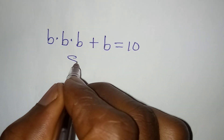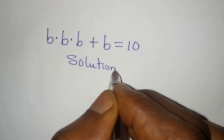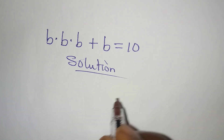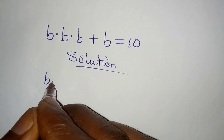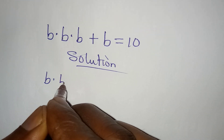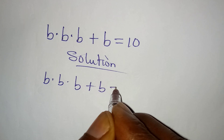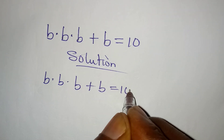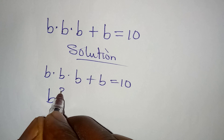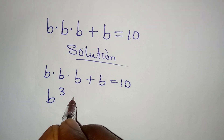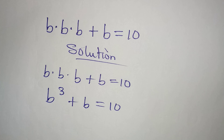Hello everyone. Let's provide the solution to this equation: b multiplied by b multiplied by b plus b equals 10. This means we are having b to the power of 3 plus b equal to 10.